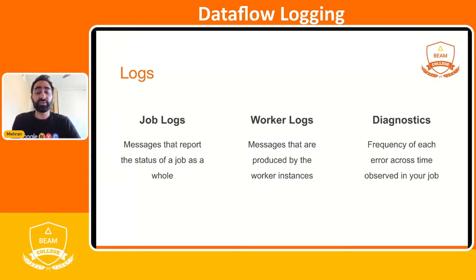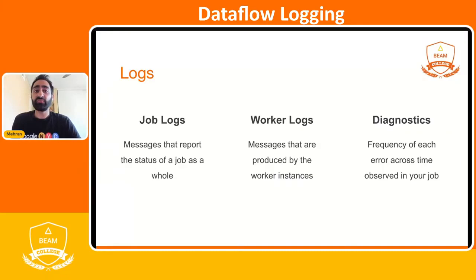Worker logs are messages produced by the worker instances. As we talked about earlier in the architecture section, workers are the instances processing all of your DoFunctions and your actual Beam code. Any errors or logs printed from them will be propagated through the worker logs tab. The diagnostics tab shows the frequency of each error across your jobs, and we'll dive deeper into error reporting integration.